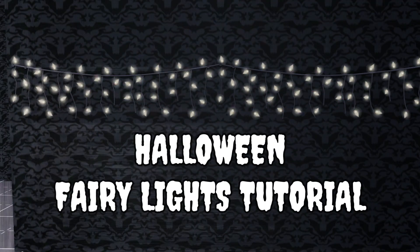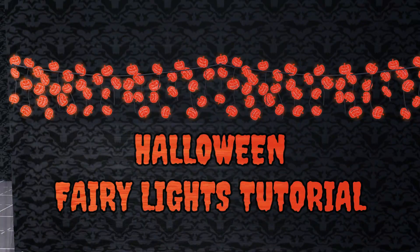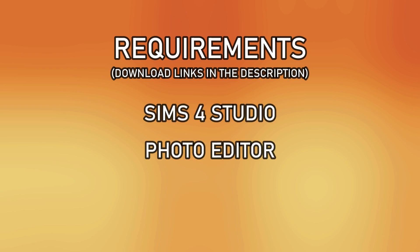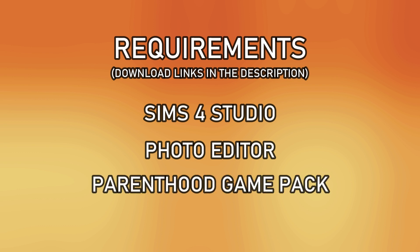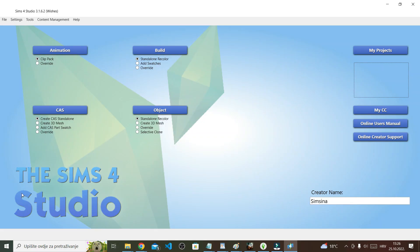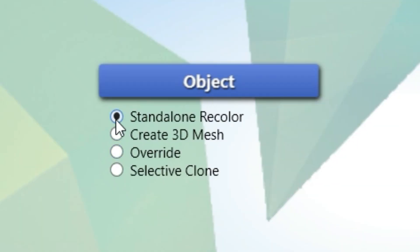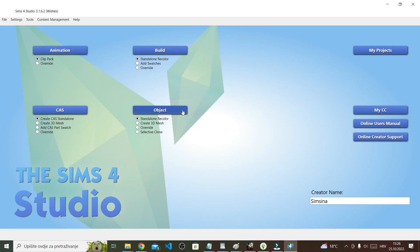As some of you might already know, to follow the majority of my tutorials including this one, you'll need Sims 4 Studio. You'll also need a photo editor, and for this particular tutorial you'll need the Parenthood game pack because I'll use an item from the pack. First, open Sims 4 Studio, then right here under Object, make sure Standalone Recolor is selected and click Object.